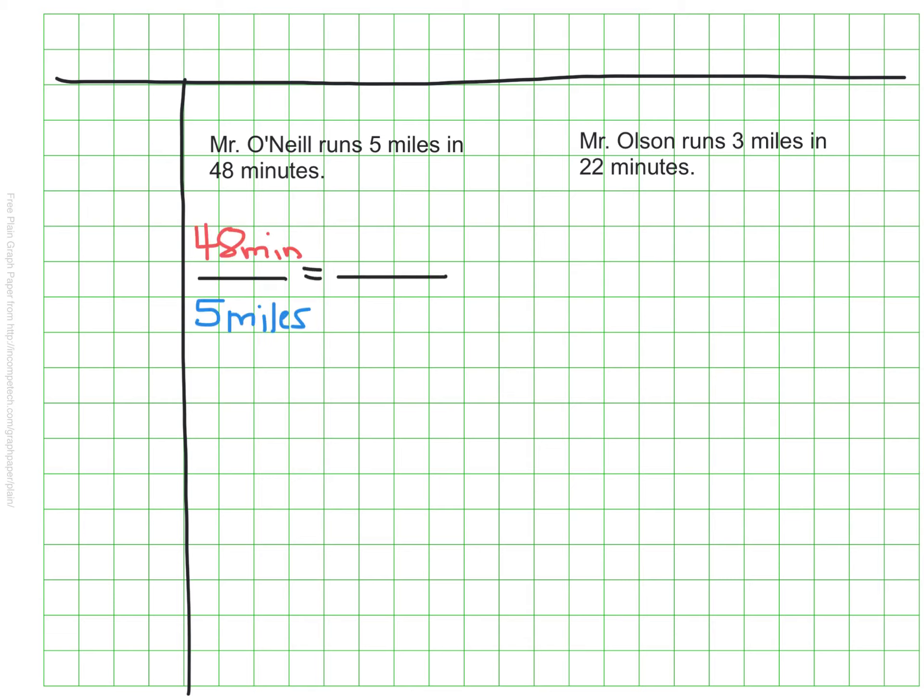It takes Mr. O'Neill 48 minutes to run 5 miles, so I've made that into a part-to-part ratio. I want to know how long it takes him to run one mile, so I'm going to record that as the denominator in my equivalent ratio that I've set up here. I can see right away that I am scaling down. I am dividing 5 by 5 to figure out his speed for his one mile. That means to keep these equivalent, I'll need to divide 48 by 5 as well.